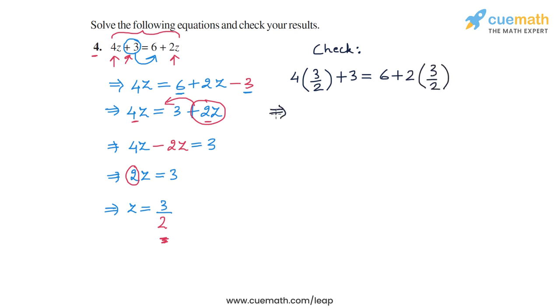So let's see whether the LHS and the RHS are equal or not. So 4 divided by 2 is 2. And 2 times 3 is 6. So we get 6 and then plus 3. And on the right hand side, we have 6 plus the 2's cancel out. So we just have 3. So 6 plus 3.